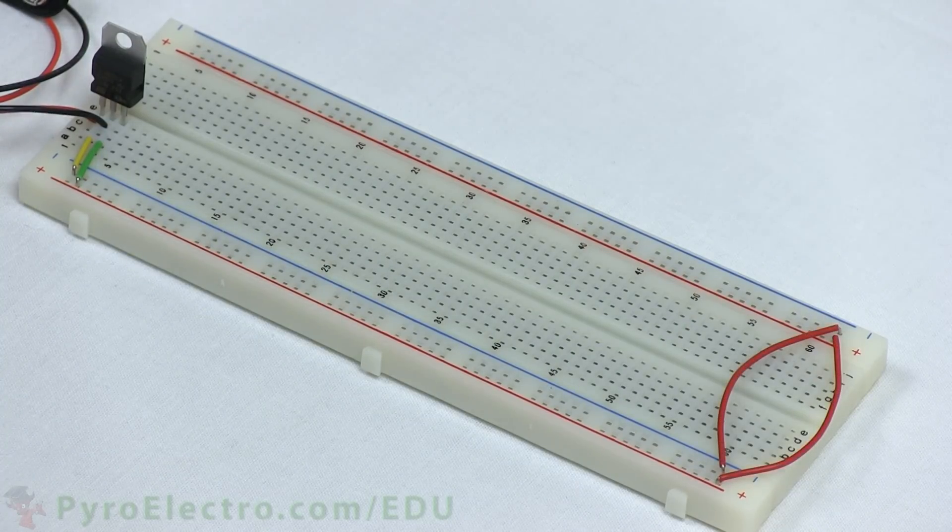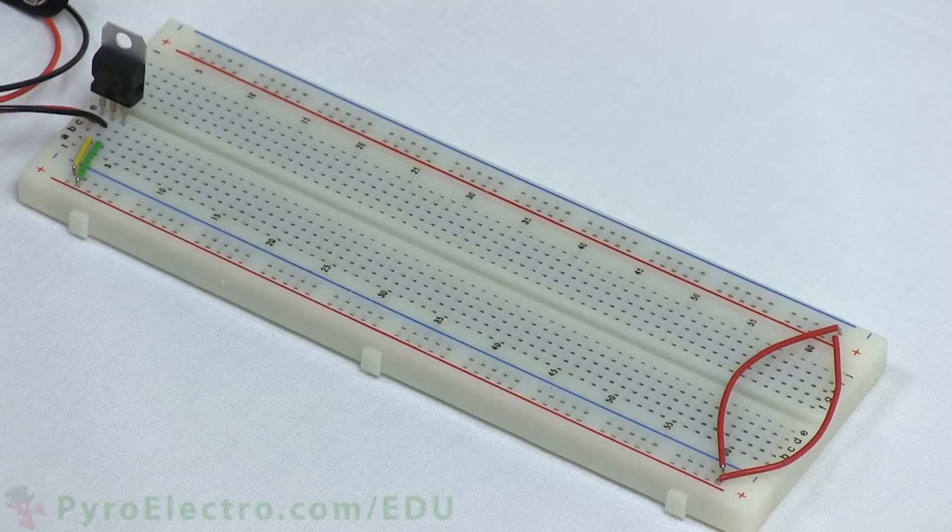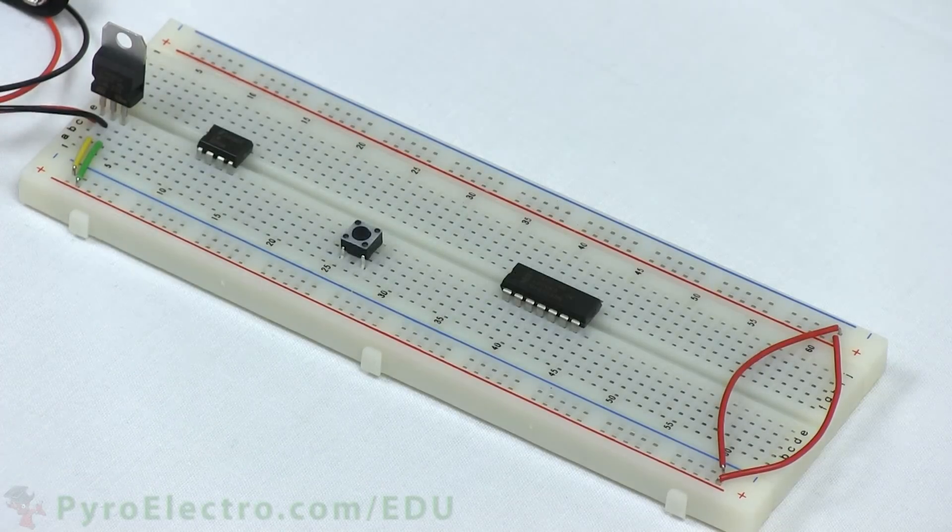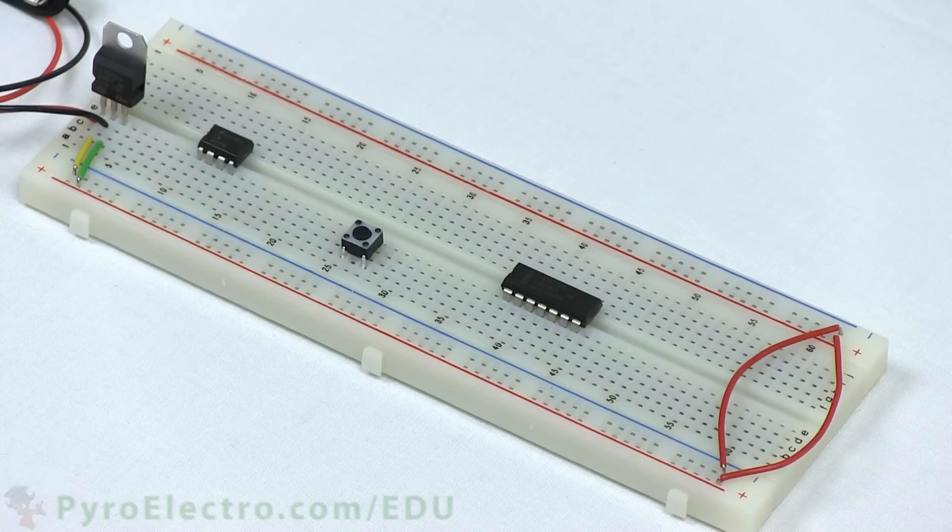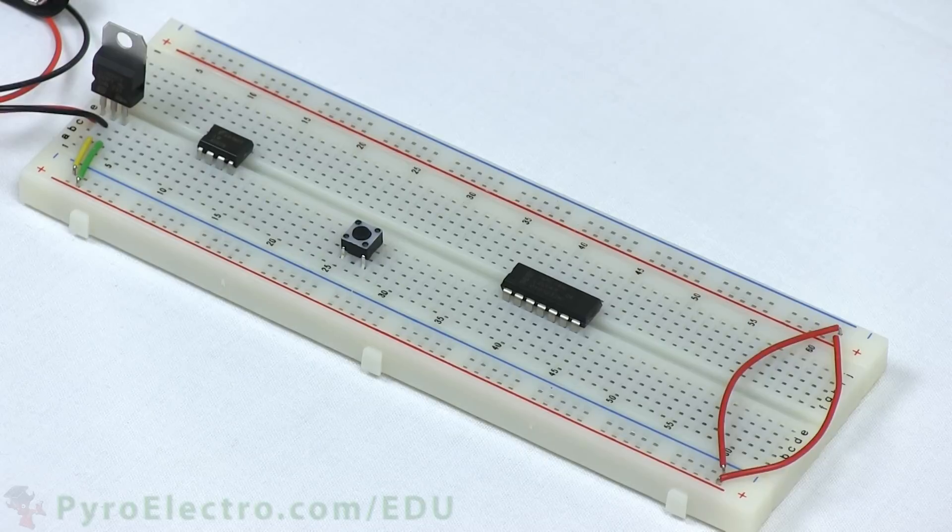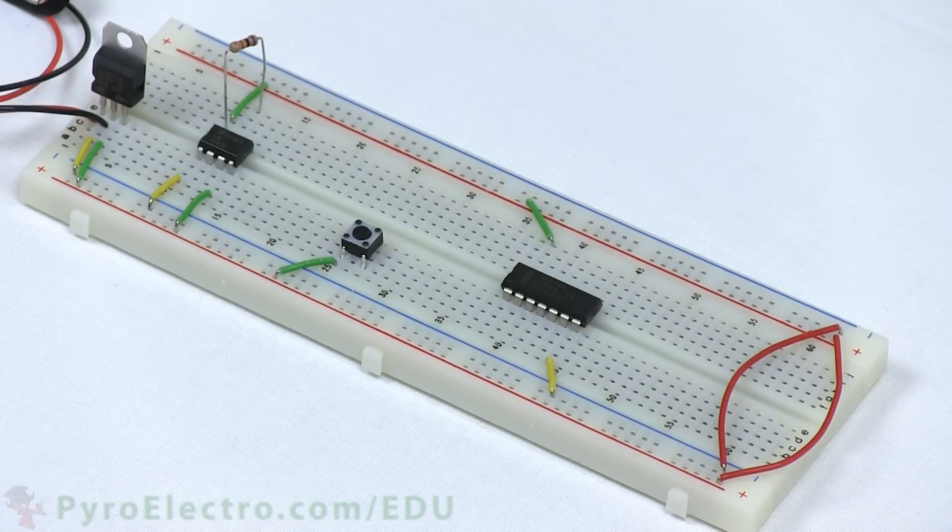At the bottom of the breadboard, we use two red wires to connect the power and ground buses together on the breadboard. Now, we place the 555 timer, 74HC74, and push button on the breadboard, and follow the schematic to wire them up.